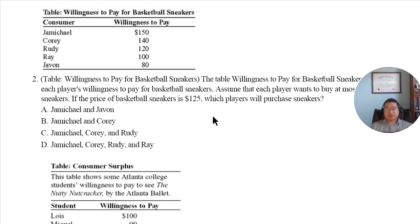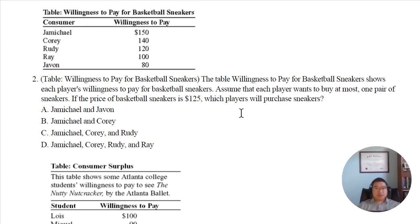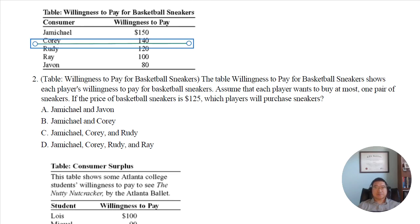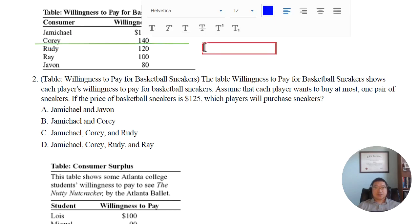We need to look at this table: willingness to pay for basketball sneakers. The table shows each player — J, C, R, R, J — each player's willingness to pay for basketball sneakers. Assume that each player wants to buy at most one pair of sneakers. If the price of basketball sneakers is $125, which is above $120 and below $140...